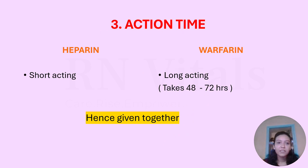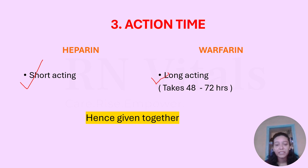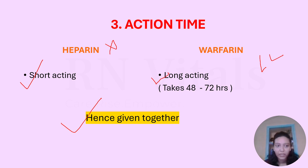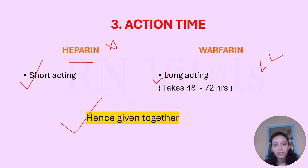The third point is action time. Heparin is a short-acting drug, while warfarin is a long-acting drug — it may take up to 48 to 72 hours to begin acting properly. Because of this, we often give both drugs together when we need immediate anticoagulation. Warfarin can be taken lifelong, while heparin cannot — heparin is short-acting and used when needed, whereas warfarin is suitable for long-term or lifelong therapy.